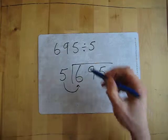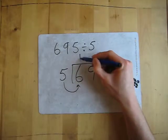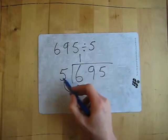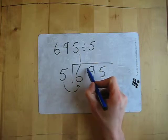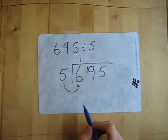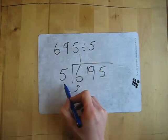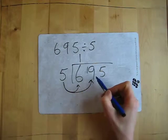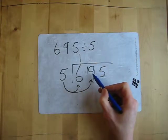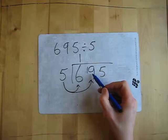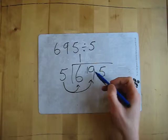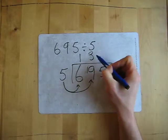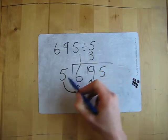It fits in once, and what's left over? 1 times 5 is 5, so from 6, 1 is left over — carry that to the next number. Then you ask the same question again: how many times does 5 fit into 19? This time because the 1 and the 9 makes it 19. We know it fits in 3 times, because 4 times would be 20, which would be too many.